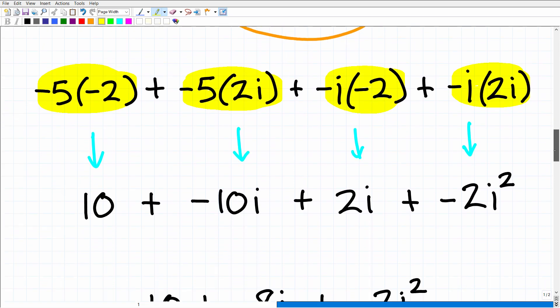Let's start cleaning this up. We have negative five times negative two, that's positive 10. Negative five times positive 2i is negative 10i. And then here we have negative i times negative two, that would be a positive 2i. And then here I have negative i times a positive 2i, that's going to be negative 2i squared.